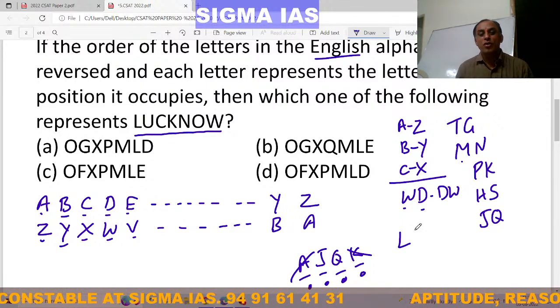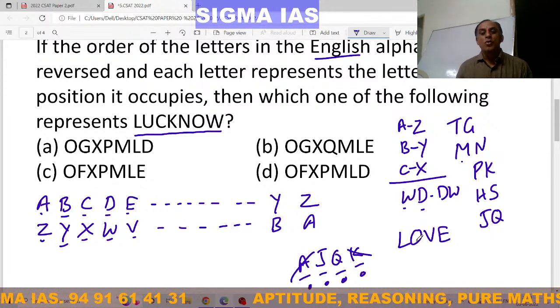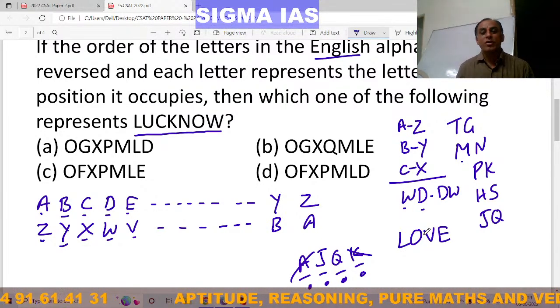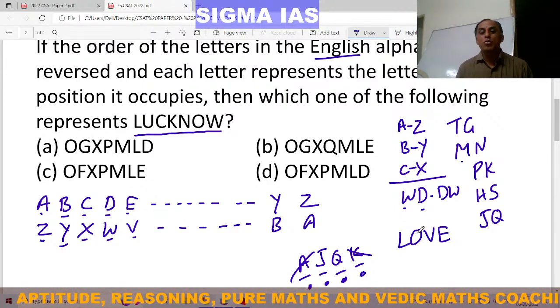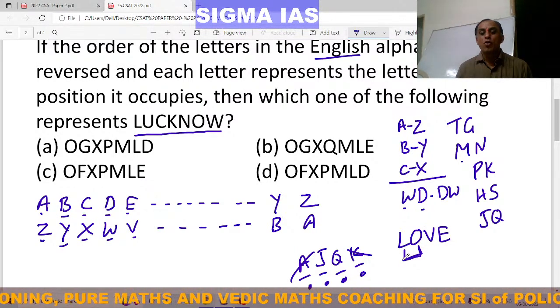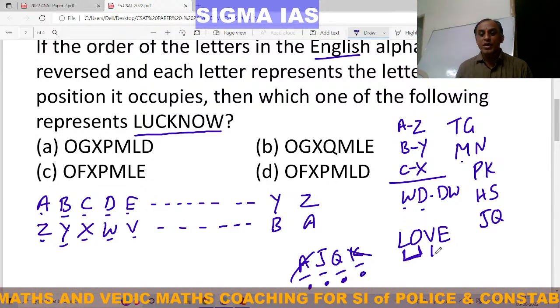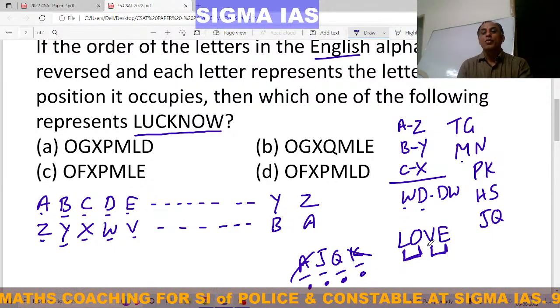And in English, one wonderful word is there. Each and every person knows this word. Love. It is one extraordinary word. You know so many specialities about this word. But one more speciality. L reverse position is O. O reverse position is L. V reverse position is E. E reverse position is V.